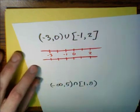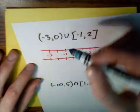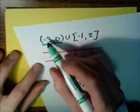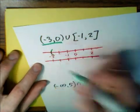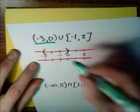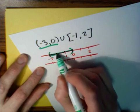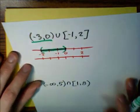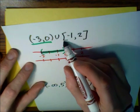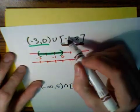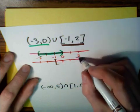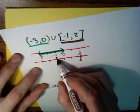We have two number lines. The first number line — shaded in green — starts at negative three, does not include the endpoints, so it's a parentheses, and we shade everything to zero, not including zero. The second number line — shaded in brown — starts at negative one with a hard bracket, meaning it's included, and goes all the way to two with a hard bracket as well, shading everything between.